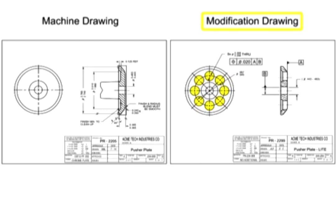Modification drawings also incorporate mandatory changes — for example, safety, reliability, or application extension into existing delivered equipment. This type of drawing can also be referred to as a make-from drawing.